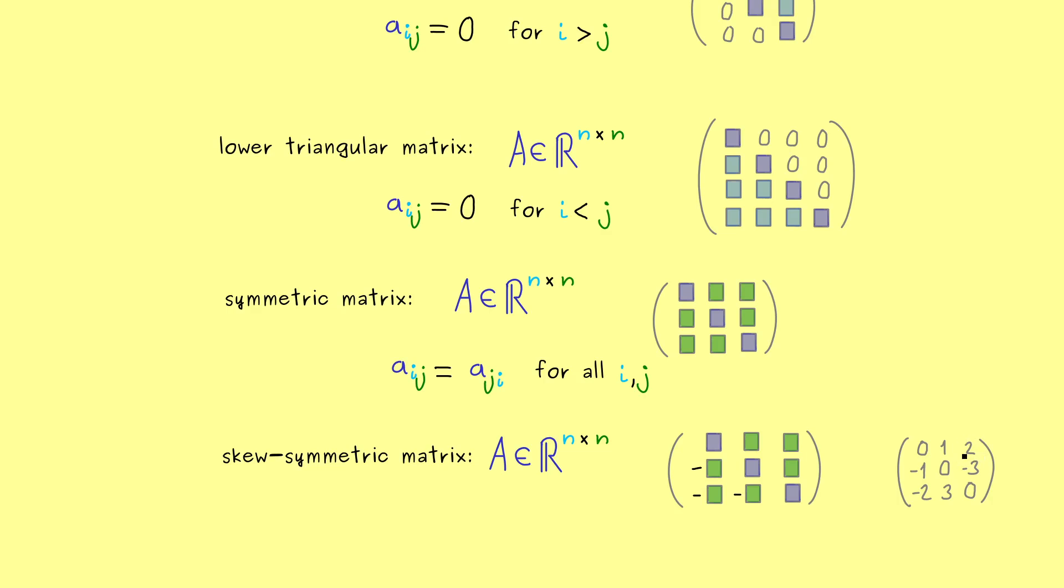So there you should see this entry here should be the same as this entry here with the exception of a factor minus 1. And of course we need this for all entries here. Hence because this sign change should also happen on the main diagonal we don't have any choice by choosing zeros there.